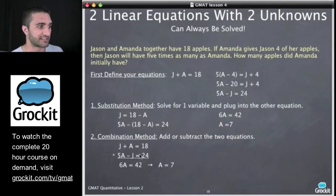In the other method, like I said, that we were stacking them, what we did is we actually have to stack these so we can add them. But this is nice. J minus J, A plus 5A gives us 6A, 18 plus 24. We even wrote the little plus symbol there to remind ourselves. 18 plus 24 is 42. We solve for A, and we get 7 as well.